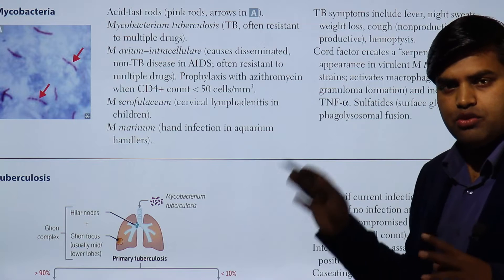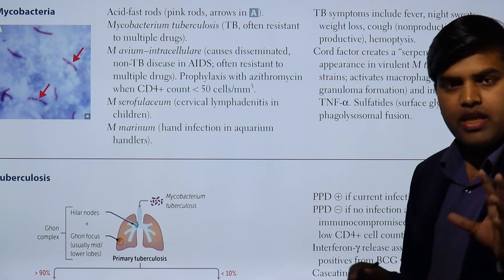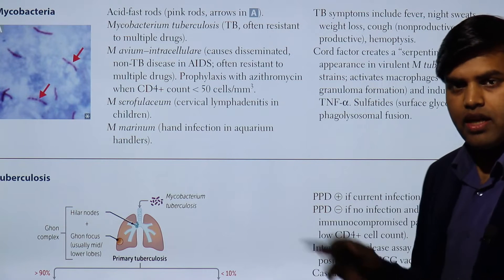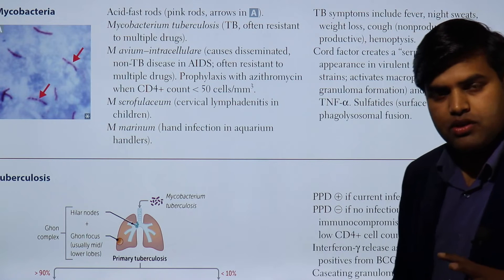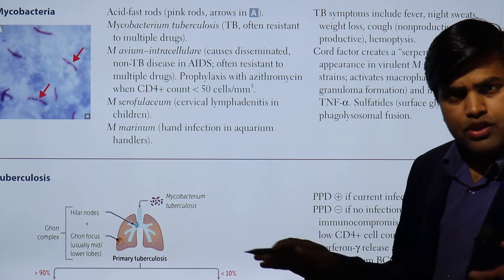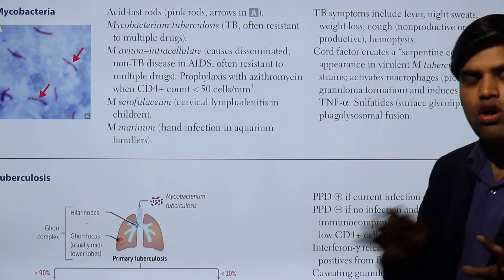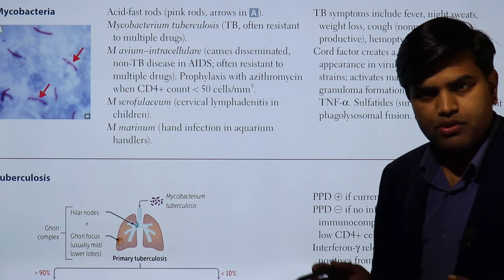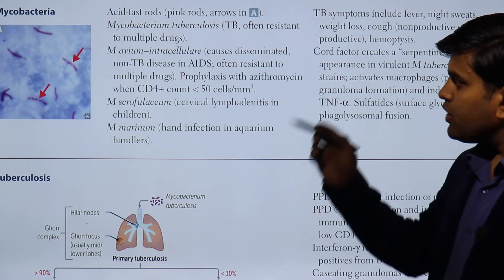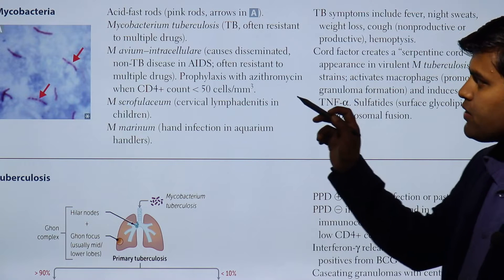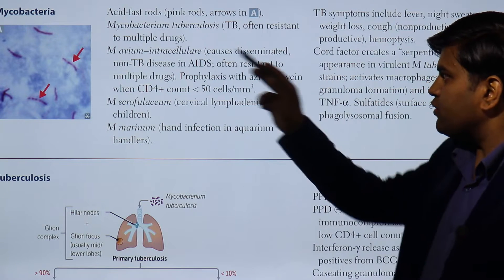We usually perform a stain known as the acid-fast stain, or the Ziehl-Neelsen stain, which helps in the detection of mycobacterium tuberculosis and excludes all other bacteria present in the sputum sample or any sample being processed. So mycobacterium is called acid-fast bacilli.